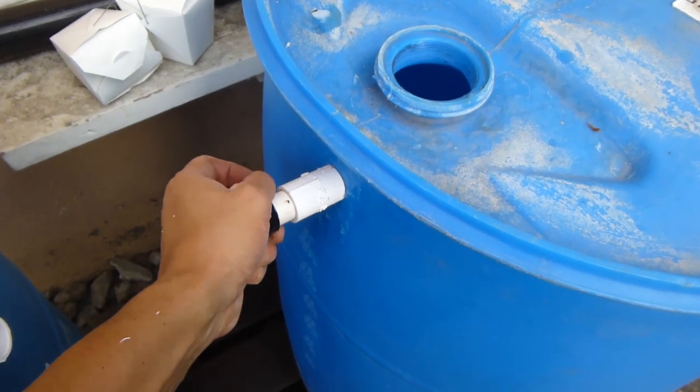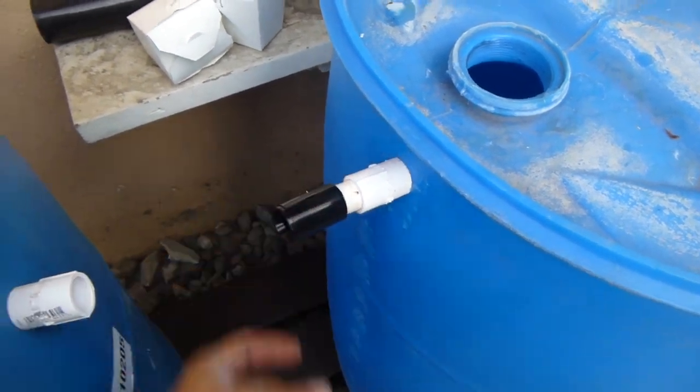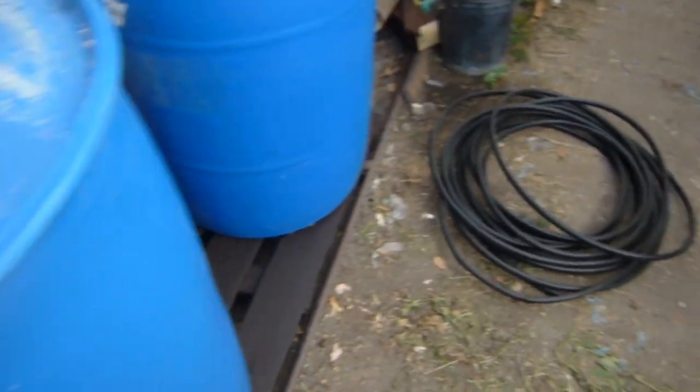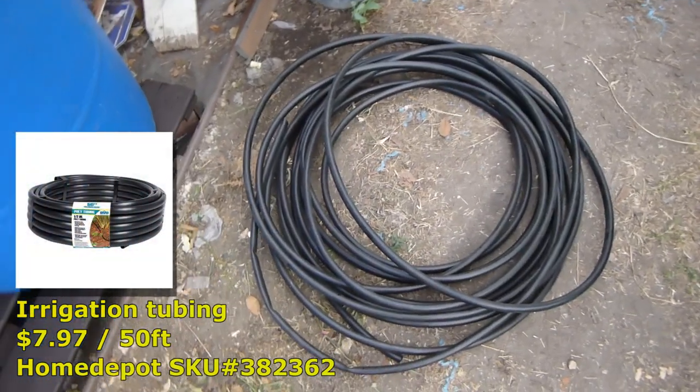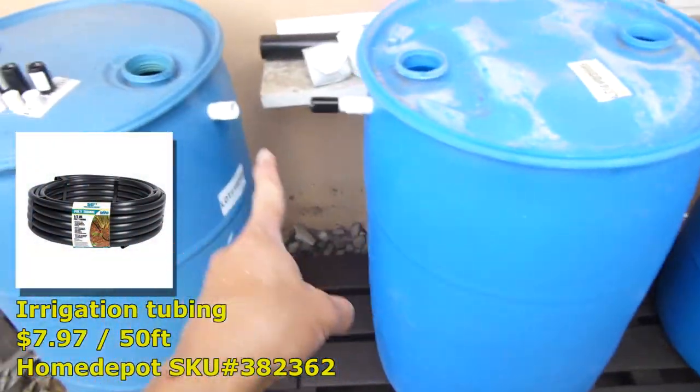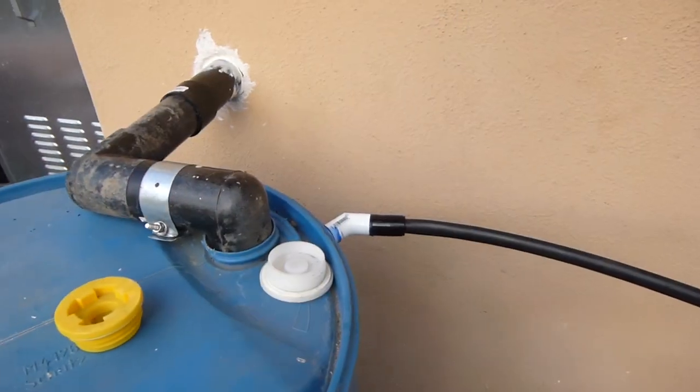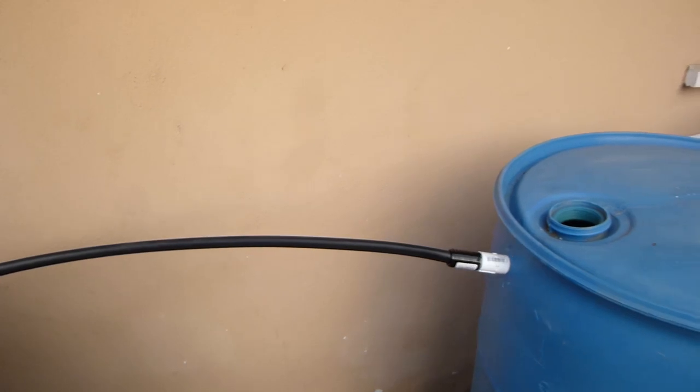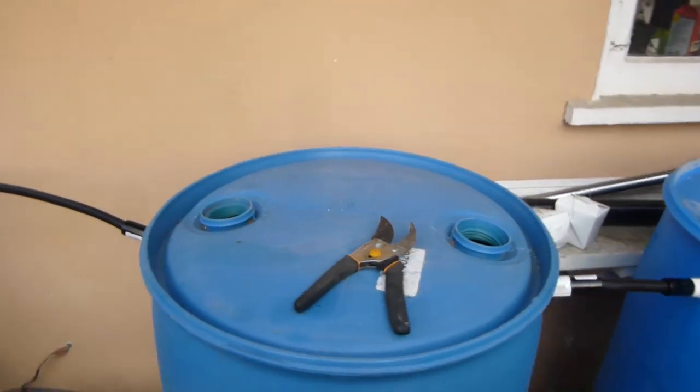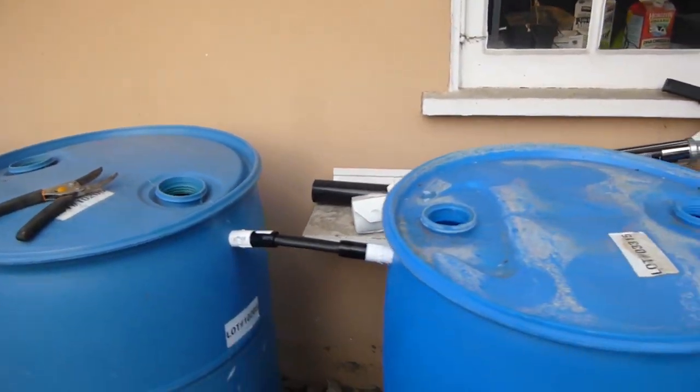Then I will use my irrigation pipe to connect between each two barrels. The first one is linked to the second one, second one is linked to the third one, and third one is linked to the last one.